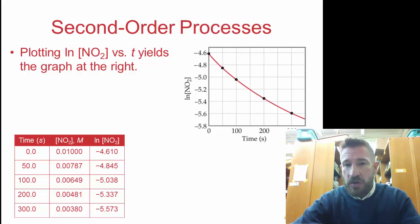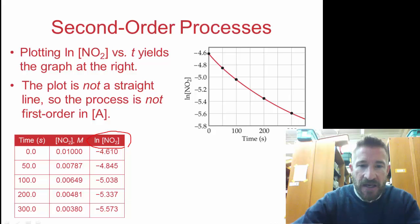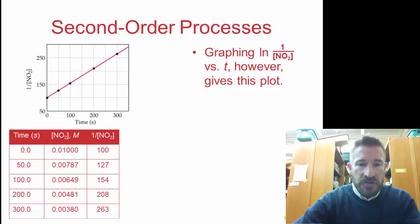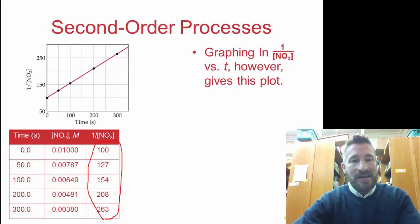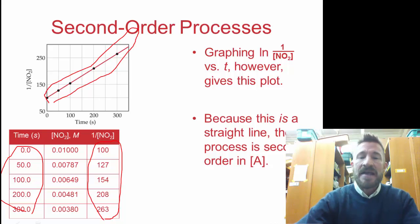When we plot this, we see if you just do natural log, we don't get a straight line. This indicates this is not a first order reaction. Here we took natural log of all that information. We did not get a straight line, so that means it's not first order. Then what we do is we change that. We're going to take the inverse of all these values - the inverse of 0.01, the inverse of 0.00787, the inverse of 0.00649, the inverse of all these numbers. When we do that, we get these numbers here. Then we're going to graph the inverse of those concentrations versus time.